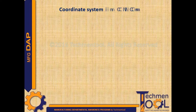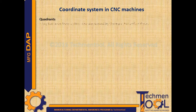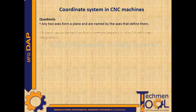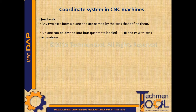Quadrants: any two axes form a plane and are named by the axes that define them. A plane can be divided into four quadrants labeled first, second, third, and fourth with axes designations.